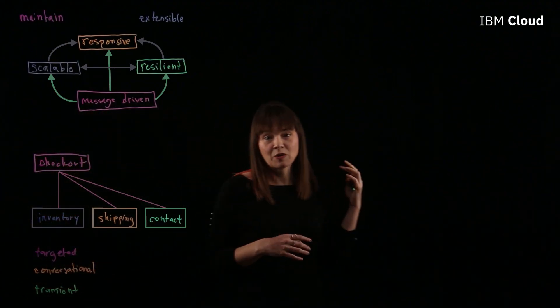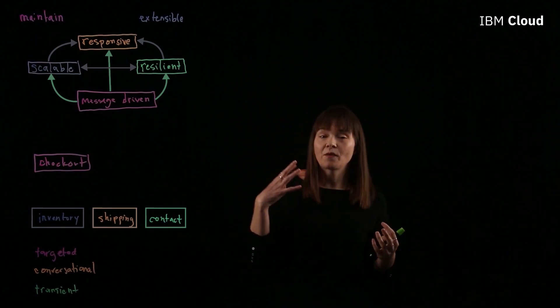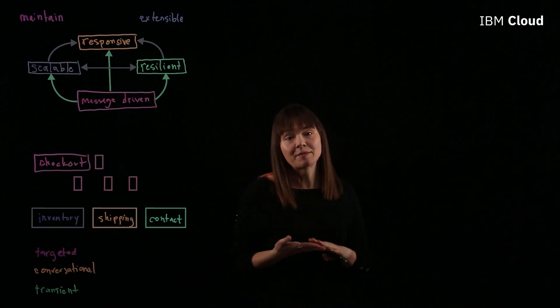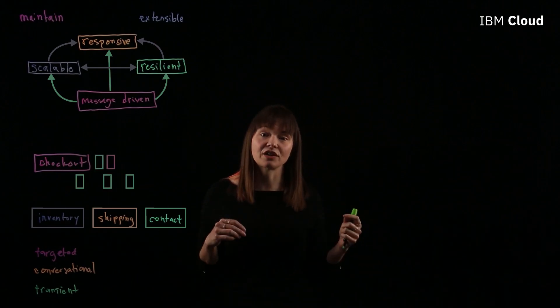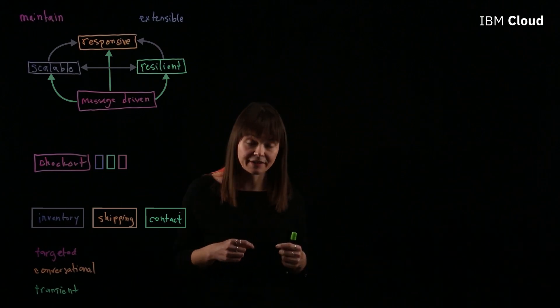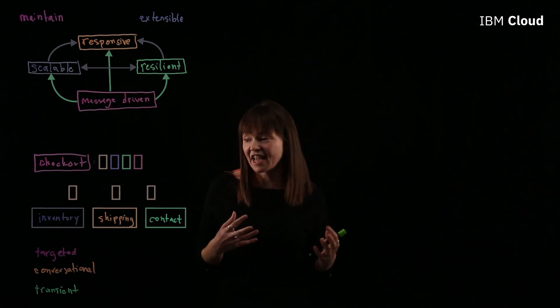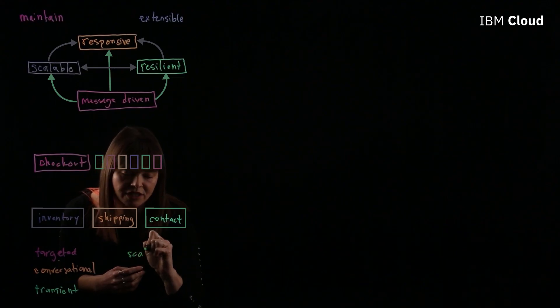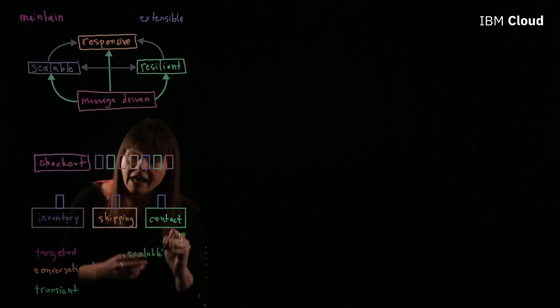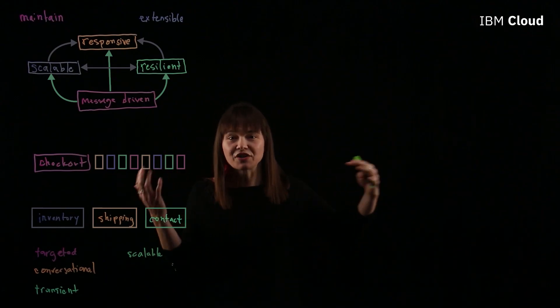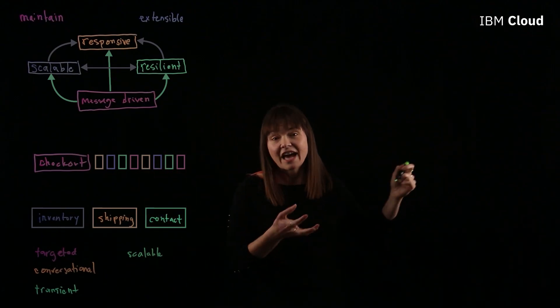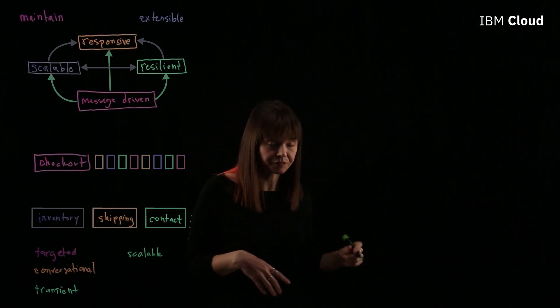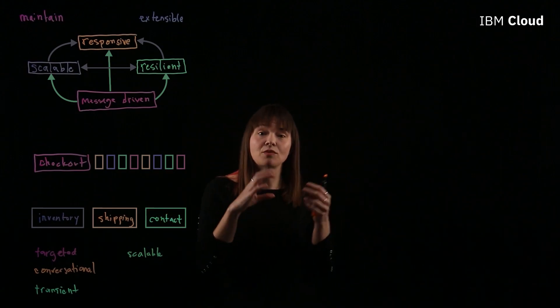Now let's compare that to eventing. So if our checkout service is producing events, it's producing an event every time a checkout happens without any concern to which service is consuming that. And so with that, we have a system that's highly scalable. So we have three services here interested in the checkout, but even if we expand it to 100 services listening to checkout, that wouldn't affect what the checkout service is doing in any way.